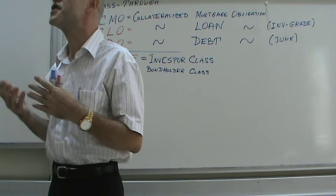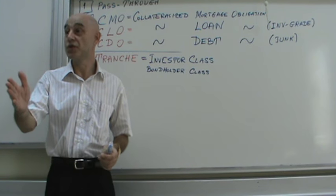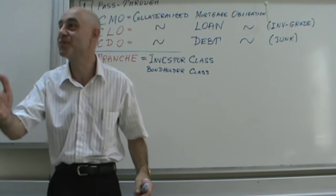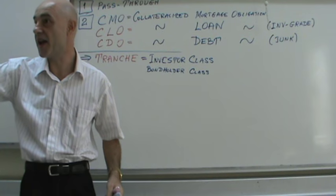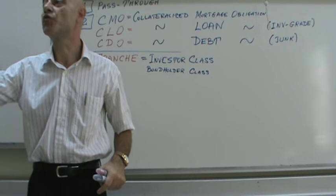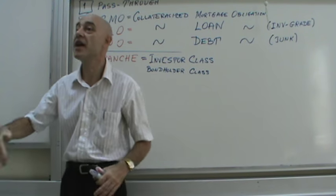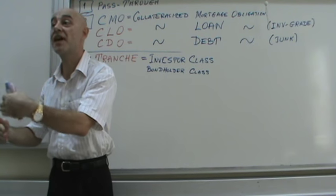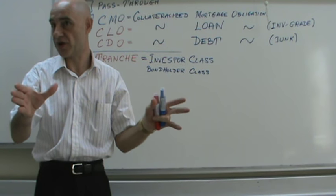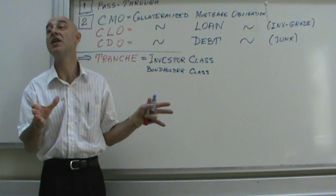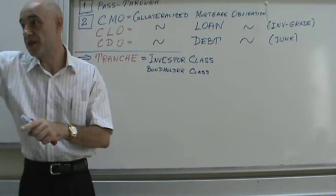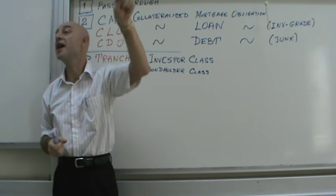To illustrate: imagine we divide a classroom into two classes — Class A and Class B. Class A will get a 6% interest return, and at the same time they get all the prepayments on the mortgages. Class B gets an 8% return and no prepayment on the mortgages.